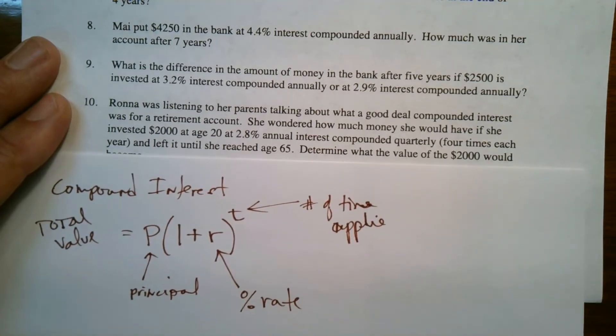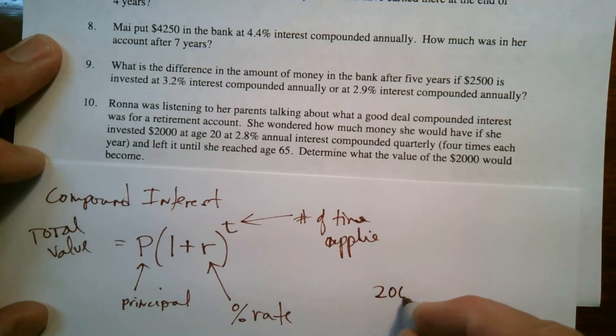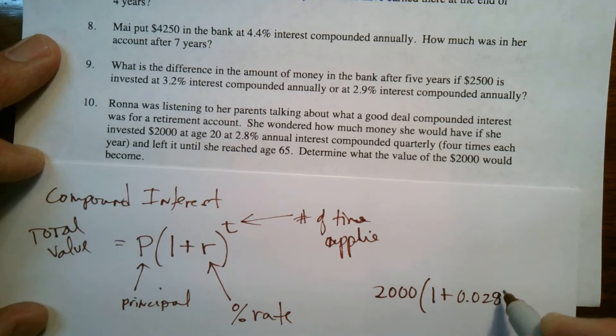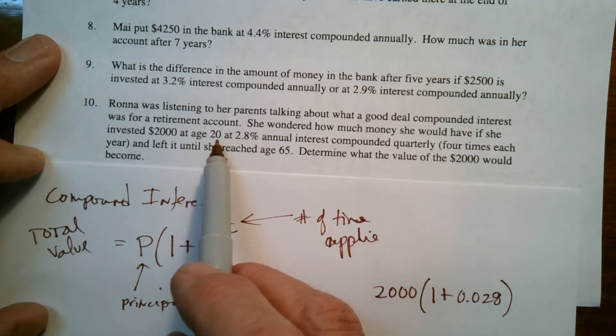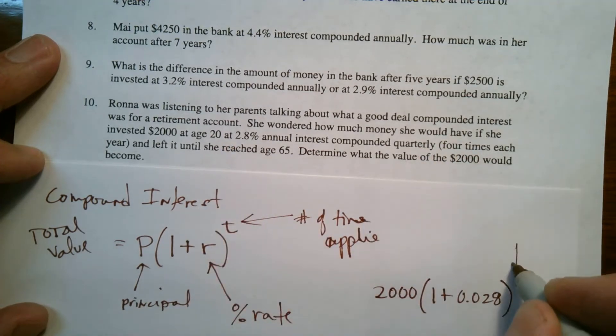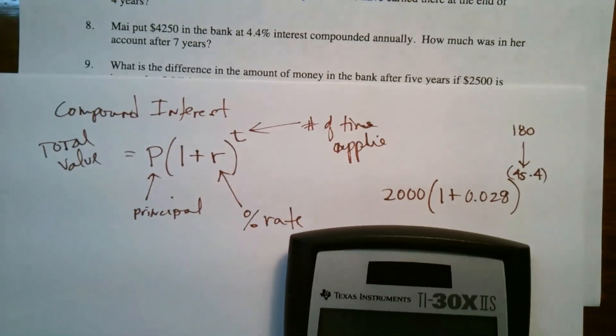So we're going to use our compound interest formula. So we're going to take the principal 2000 and we're going to multiply it by one plus the interest rate, which is 2.8. So we write 0.028, we've got to write it as a decimal and that's to the T. So how many times is that compounded? Well, she put it in at 20. She wants to know what it's going to be at age 65. So there's a 45 year timeframe between 20 and 65, but it's compounded quarterly. So this number here is going to be 45 times four, the 45 years times the four. So that's what's going to go there, which 45 times four is 180. So that's the math that we have to do.